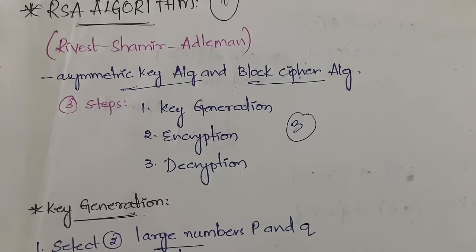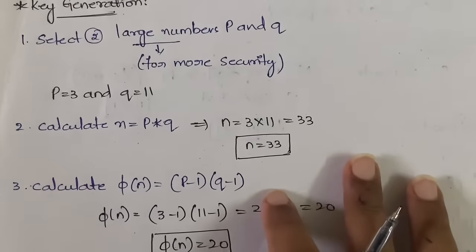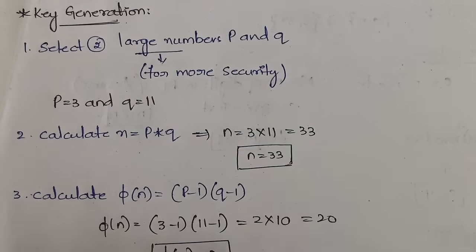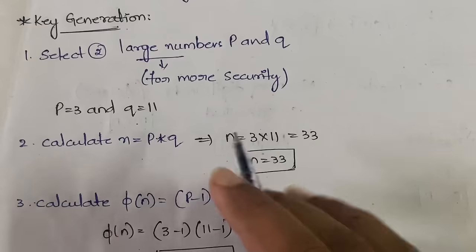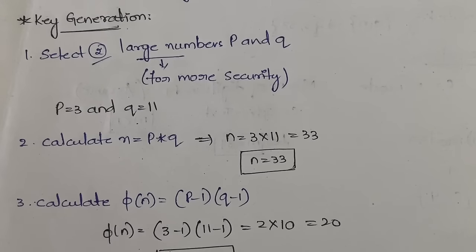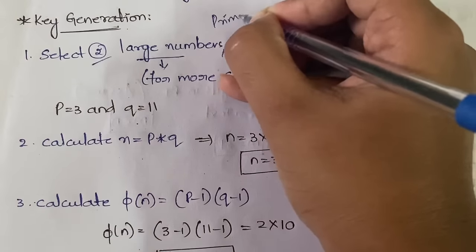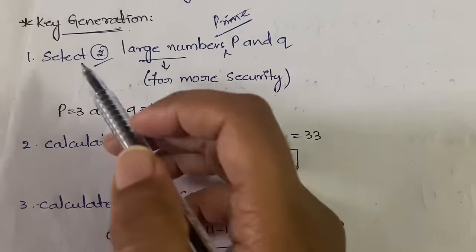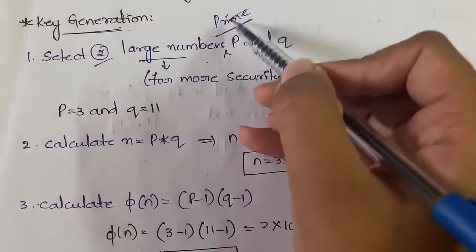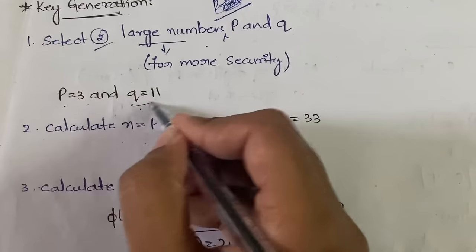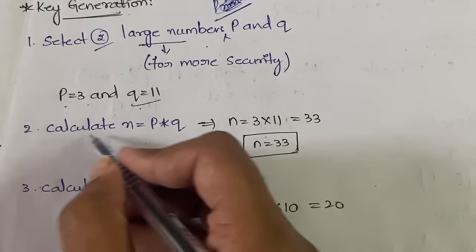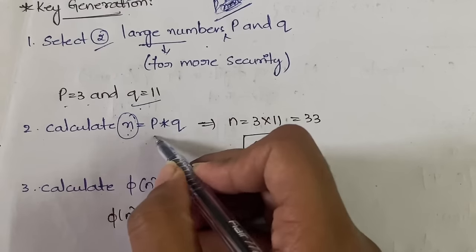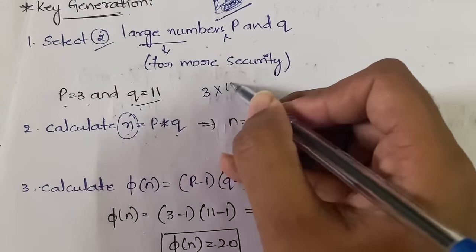There are three main steps: key generation, encryption, and decryption. Encryption and decryption are straightforward; key generation has some steps and is somewhat lengthy. In the first step, you need to select two large prime numbers p and q. The reason for selecting large numbers is for security. In our example, let p = 3 and q = 11. In the second step, calculate n, which is p × q, so 3 × 11 = 33.